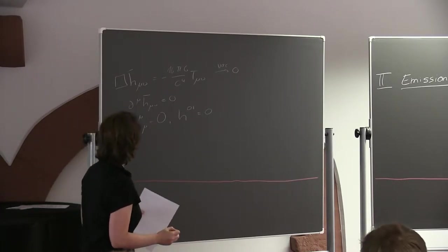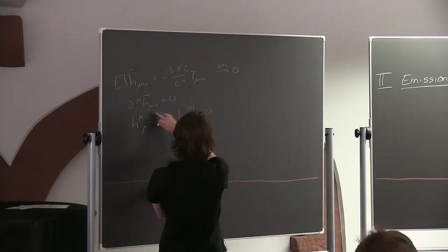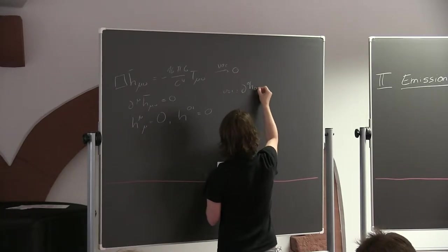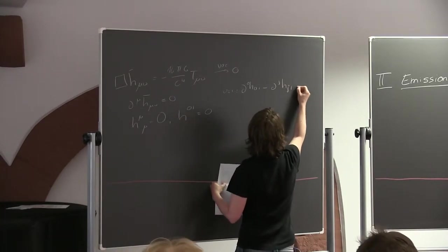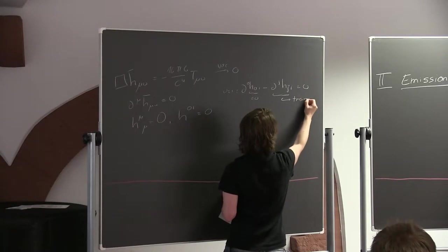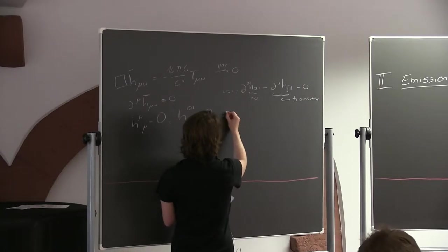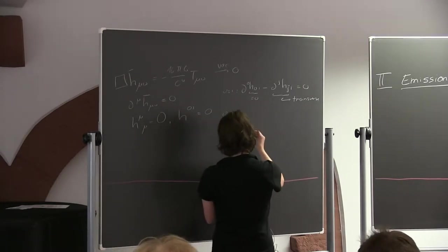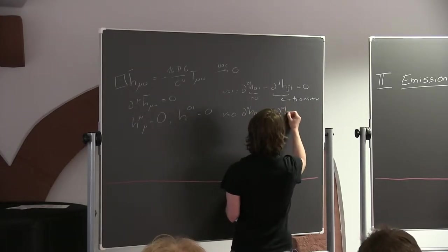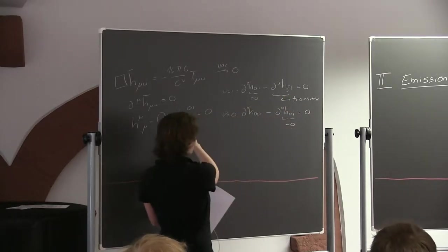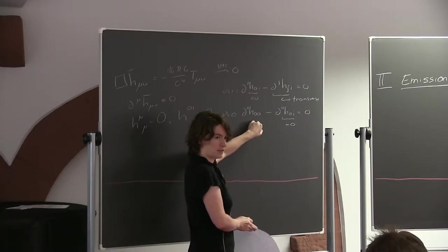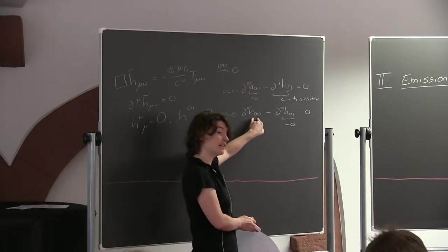From those conditions you can do two things. Using essentially Lorentz gauge but setting mu equal to i, you get that d_0 h_{0i} minus del_j h_{ji} is zero. You see this term is zero, and then you see it's transverse. The second thing is to set nu to zero, which gives the condition del_0 h_{00} minus del_0 h_{0i} equals zero. This term is zero by construction.